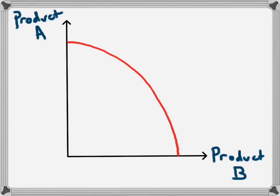In this video we're going to look at a production possibility frontier. It shows the combination of products which could be produced in an economy if it used all of its resources efficiently.